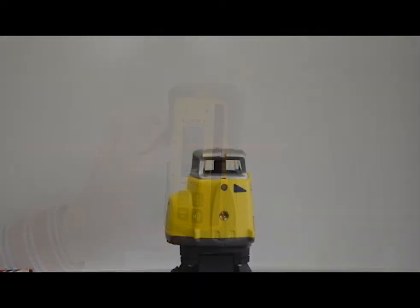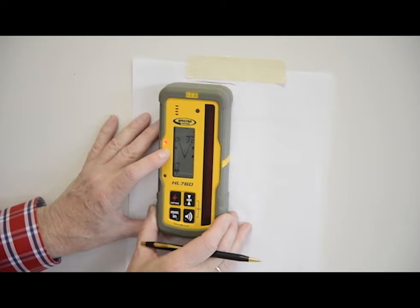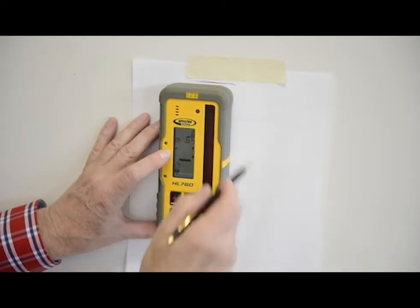Rotate the laser 180 degrees minus Y axis toward the wall and allow it to re-level. Raise or lower the receiver until you get an on-grade reading for the minus Y axis and make a second mark on the wall.